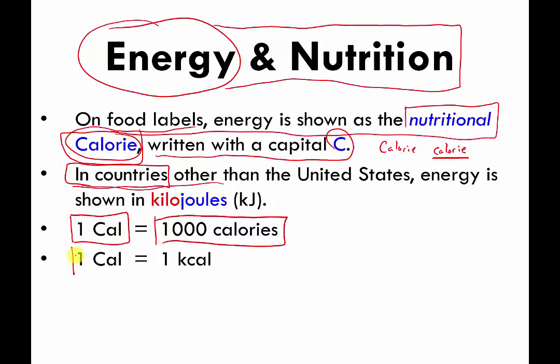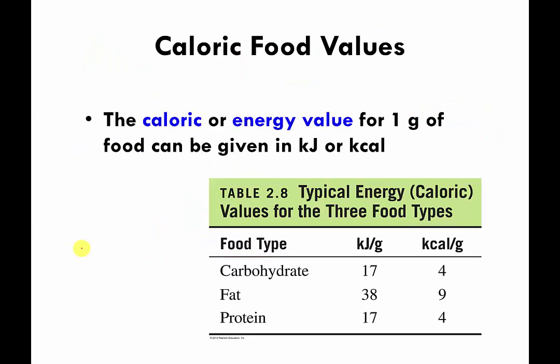Another way of saying that is: one nutritional calorie is the same thing as one kilocalorie of energy. So there's a pretty simple relationship — a thousand regular calories that we've been talking about is equal to one nutritional calorie. This is a table taken from your book, and what they want to show you is just the average amount of energy you can get from different types of foods.